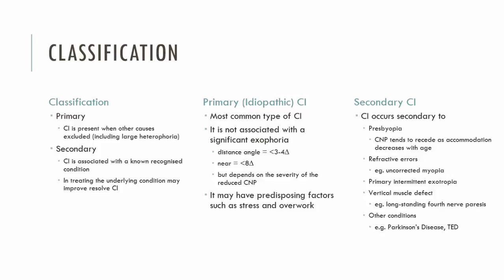The reason we're discussing CI with exophorias and exodeviations is because it's usually associated with an exophoria — not always, but often. However, the exophoria noticed in primary CI is relatively insignificant. At distance, around three or four prism dioptres or less is considered normal, and at near, up to about eight prism dioptres is fine.